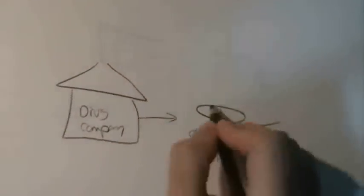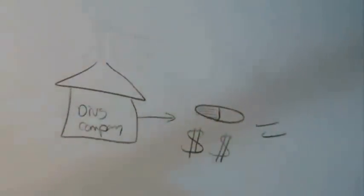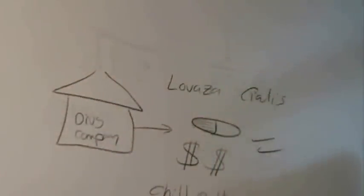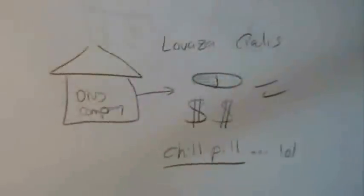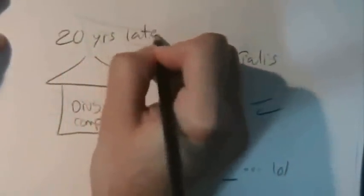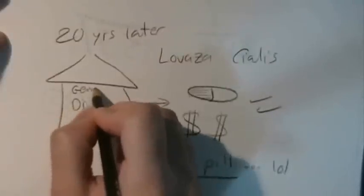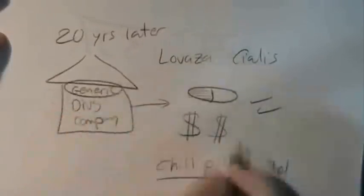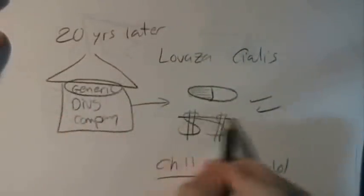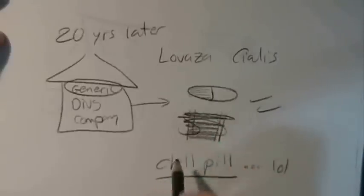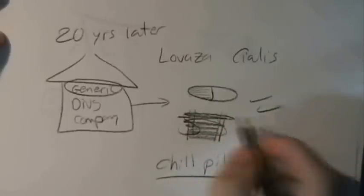So the story begins when a drug company invents a new drug, they sell it for an expensive price to pay for the research and the advertisements they have done. And they can call this drug any brand name they want, Lovazas, Cialis, Chill Pill, anything they want. So 20 years later, when their patent runs out, other companies can manufacture the same drug and sell it for cheap, since they don't pay for any advertisements or nearly as much research.